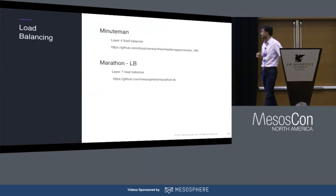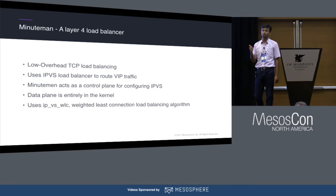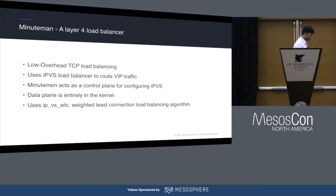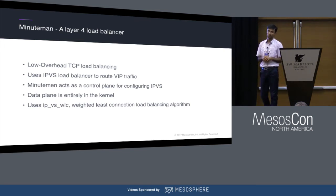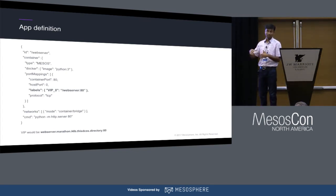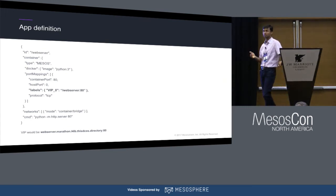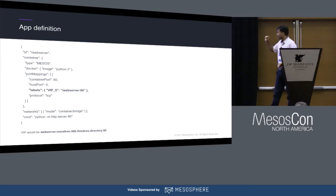Coming to load balancing — it is done through Minuteman and Marathon LB. Minuteman is a layer 4 TCP load balancer. It uses IPVS — load balancer virtual server — which is in the Linux kernel, so the entire data plane is inside the kernel and Minuteman only handles the control plane. You use VIPs in DCOS through the app definition by specifying a label called VIP along with the VIP name. You can also use IP VIP to directly give an IP address and port.